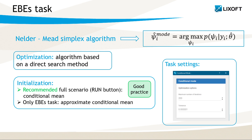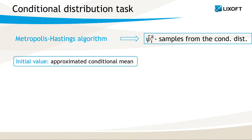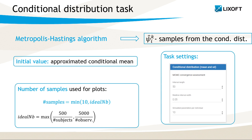Otherwise, when we run one task after another, the algorithm starts with the approximate conditional mean. Settings allow to choose the maximum number of iterations and also the tolerance for the difference between two successive iterations at which the algorithm stops. The conditional distribution task samples the conditional distribution, which takes into account the final population parameters estimated by SAEM. Monolix uses a Markov chain Monte Carlo class algorithm called the Metropolis-Hastings algorithm and initializes it with the approximate conditional mean. The number of samples used for plots is calculated as the minimum between 10 and the value given by a formula called ideal NB.